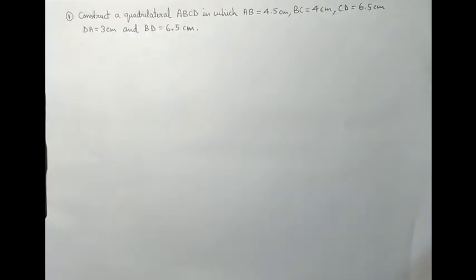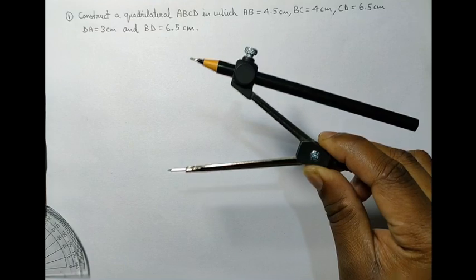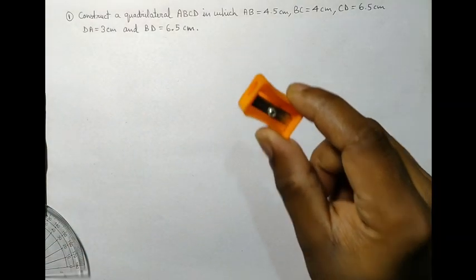Wait, before we begin, we need to have a pencil, a ruler, a protractor, a compass with a pencil, an eraser, and a sharpener.